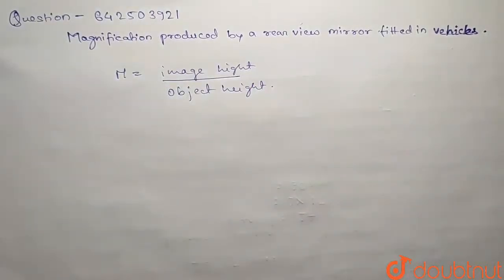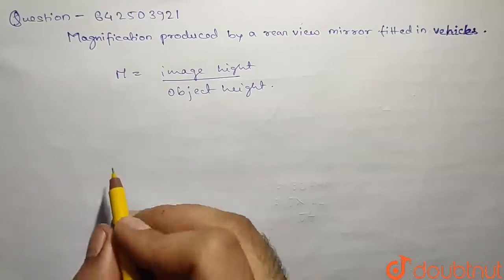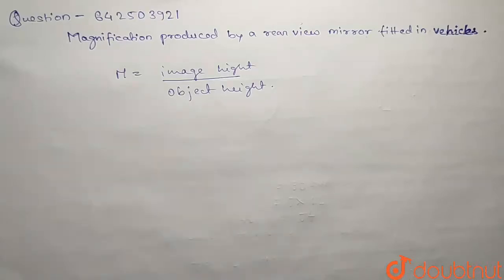So we know that if the value of magnification is one or greater than one, then it will have an image as its own length or magnified length. So it should be less.